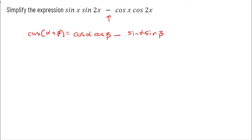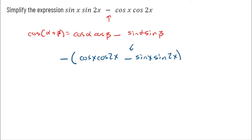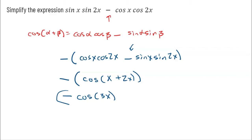It's in a slightly different order, so all I have to do is factor out a negative from the original problem. Factoring out a negative gives me cosine of x times cosine of 2x minus sine of x times sine of 2x — now it matches the order of the cosine sum identity. Keeping the negative sign out front and working backwards: cosine cosine minus sine sine equals cosine of (x + 2x), which is cosine of 3x. So my final simplified answer is negative cosine of 3x.